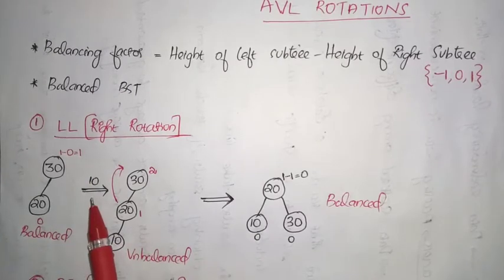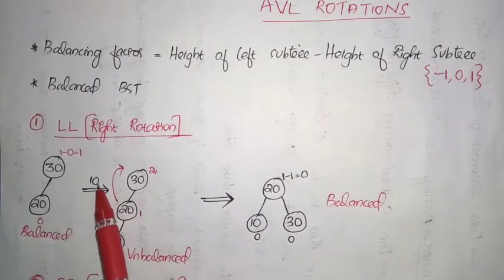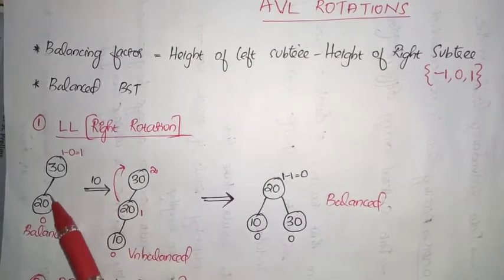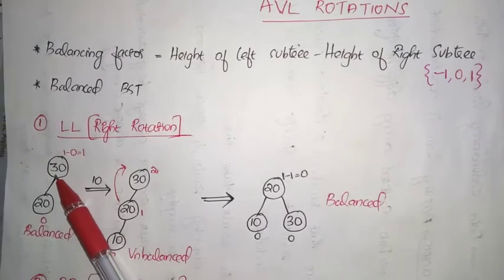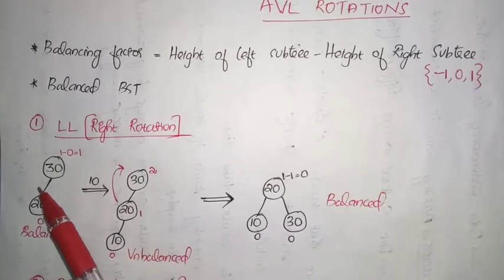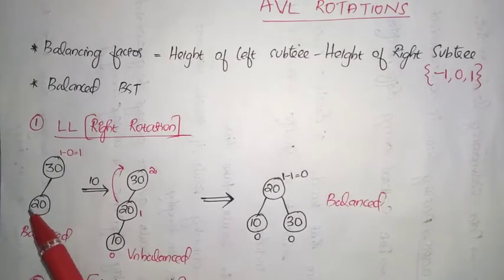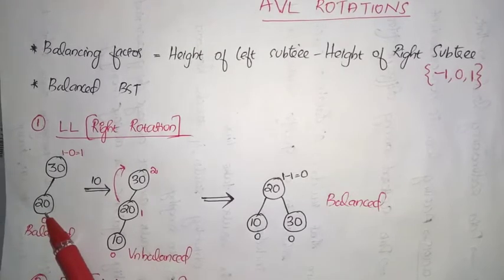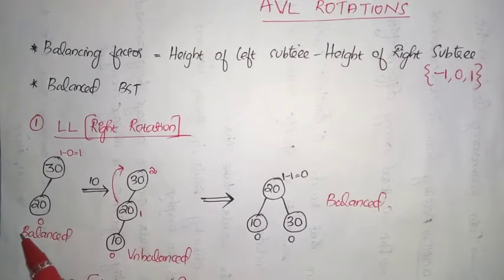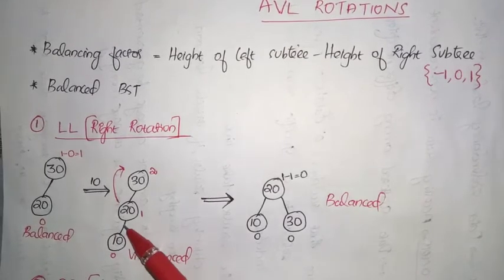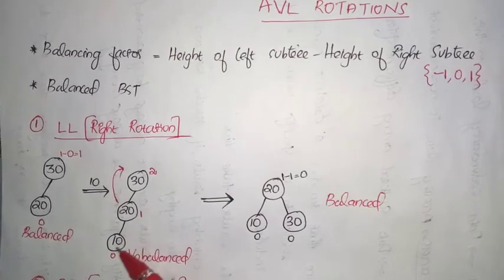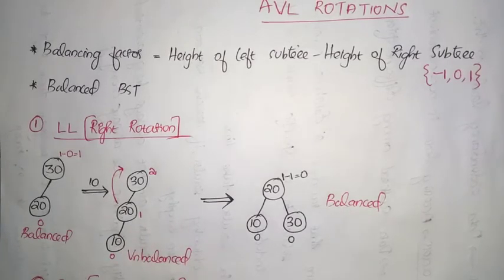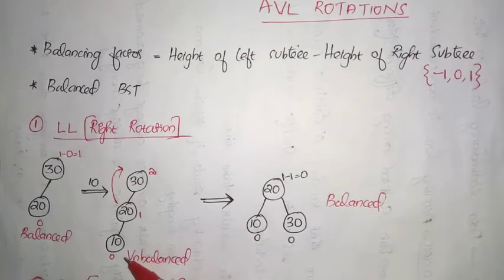Now suppose we have to insert the key value 10 into this specific tree. Since 10 is smaller than 30, it goes to the left of 30. Since 10 is lesser than 20, it goes to the left of 20, so ultimately 10 will be placed as a left child of node 20. After insertion of each node we have to recalculate the balancing factor of each node.